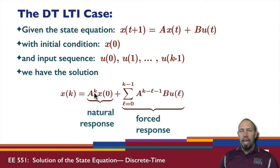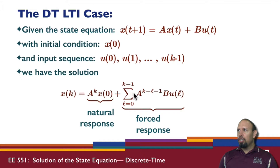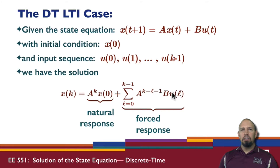Similarly, the term involving the input but not the initial condition is called the forced response. This is the response when the initial condition is zero. There is clearly a relationship between this response and the transfer function of the system. Notice that this summation is actually a discrete convolution involving the system and the input — which we expect, since applying an input to a dynamic system yields a convolution.